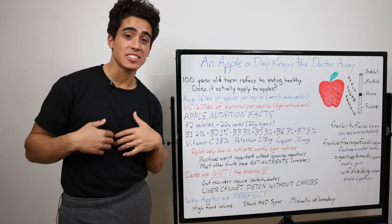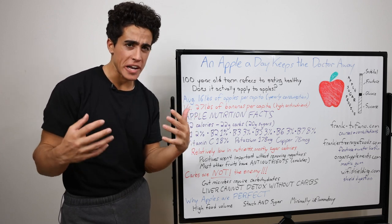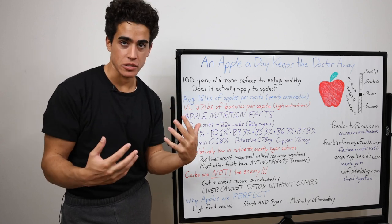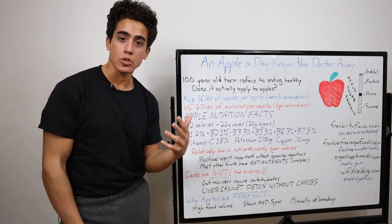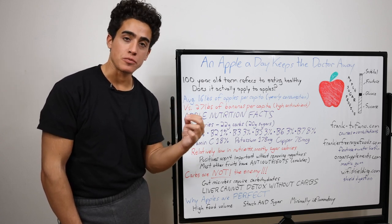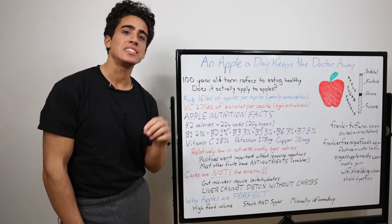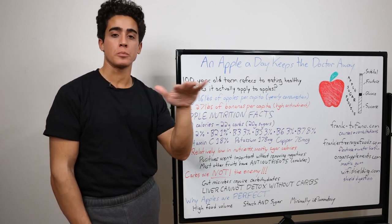Starch will give the toxins something to soak into and feed your gut bacteria so that those microbes can hold on to even more toxins. The liver uses sugars to detox and reduces cell damage by creating fat to store toxins in. And apples really seem to be one of the best foods across the board for this.